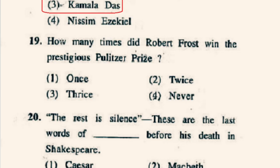Question number 19: How many times did Robert Frost win the prestigious Pulitzer Prize? Robert Frost won the Pulitzer Prize four times — for New Hampshire in 1924, Collected Poems in 1931, A Further Range in 1937, and A Witness Tree in 1943. So none of the given options may be correct if they don't state four.